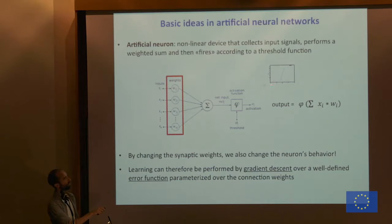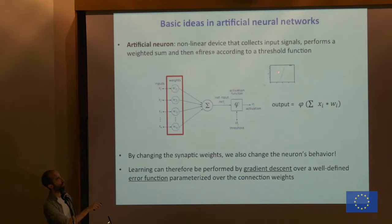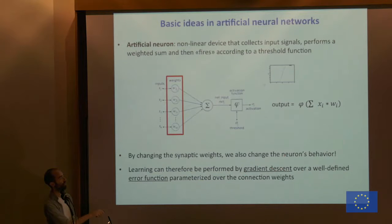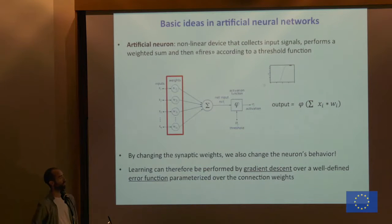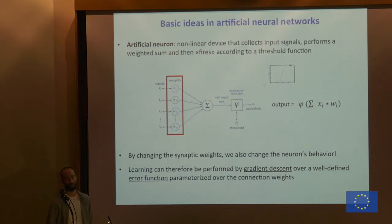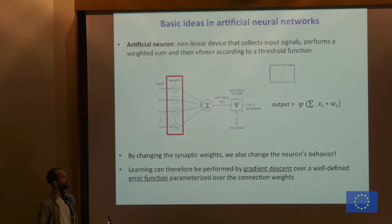The activation function is nonlinear but also continuous, like a sigmoid, which allows us to perform gradient descent. If we have a threshold function like a heavy-side function, it is much harder to perform gradient descent because we cannot differentiate the function easily. So for the moment we just consider continuous functions.